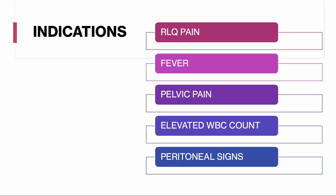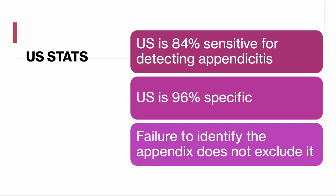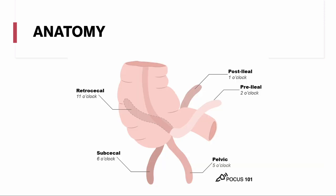Next, appendicitis. Patients we'll be imaging present with right lower quadrant pain, fever, pelvic pain, elevated white count, or peritoneal signs. There are 250,000 cases annually with a lifetime prevalence of 9% in men and 7% in women, and the predominant age is 10 to 30 years old. Ultrasound is about 84% sensitive for detecting appendicitis but very specific at 96%. It's always important to remember that failure to identify the appendix does not exclude it. The appendix can sit in many locations — retrocecal, post-ileal, pre-ileal, pelvic, subcecal — making it sometimes tricky to find.